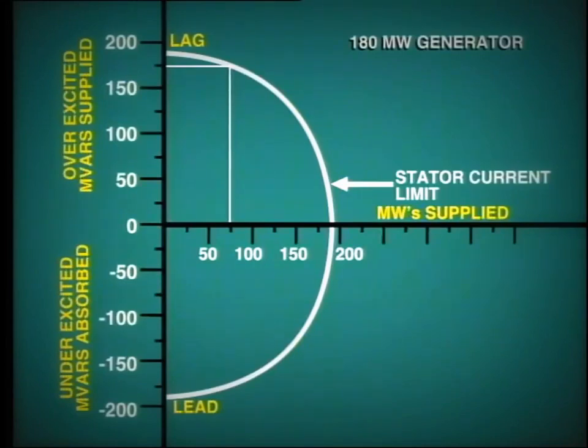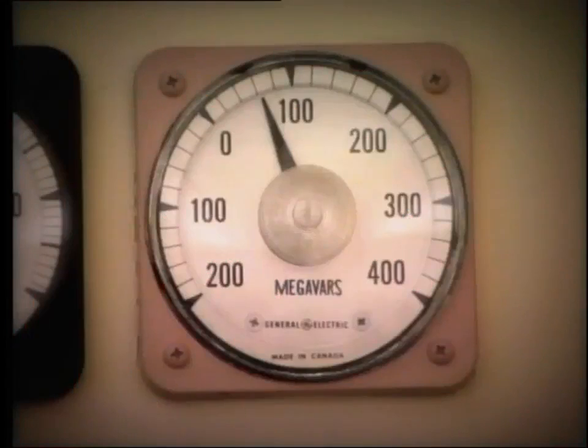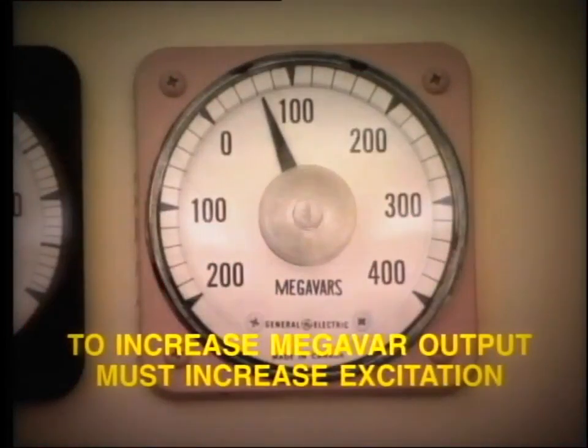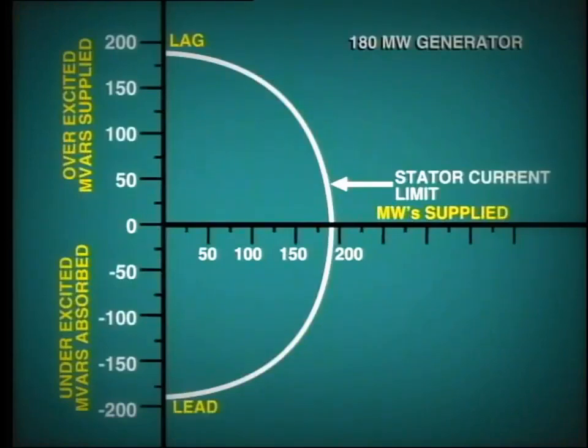However, there are other limits to observe in generator operation. As we know, in order to increase the megavar output of the generator, we must increase excitation. The increase in excitation current flow increases the heating of the rotor winding.